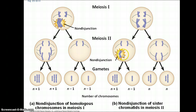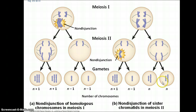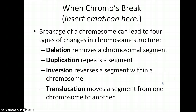If nondisjunction occurs during meiosis II, then sister chromatids do not separate appropriately, and a small proportion of cells have extra or missing chromosomes, but some cells from the original germ cell still wind up having the appropriate complement of chromosomes.